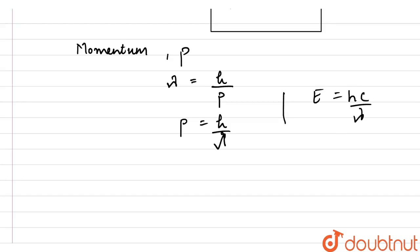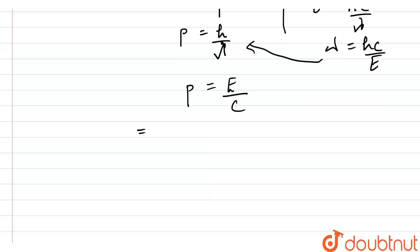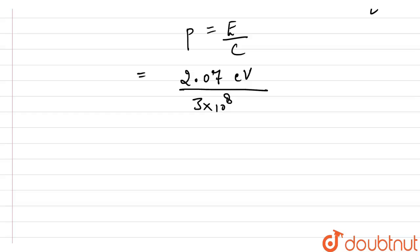Also, E is equal to hc over lambda, so we can take lambda equal to hc divided by E. Substituting, we get the momentum equal to energy of the photon divided by speed of light. The energy of the photon is 2.07 electron volt, divided by speed 3 into 10 to the power 8, giving 0.69 into 10 to the power minus 8 electron volt second per meter.